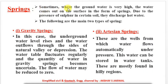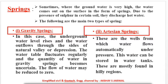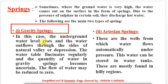Springs: sometimes, where the groundwater level is very high, water comes out on the surface in the form of springs. Due to the presence of sulfur in certain soil, they may discharge hot water. The two main types of springs are gravity springs and artesian springs. In gravity springs, the underground water level rises and water outflows to the sides of a natural valley or depression. The water table fluctuates regularly and the quantity of water in gravity springs becomes uncertain.